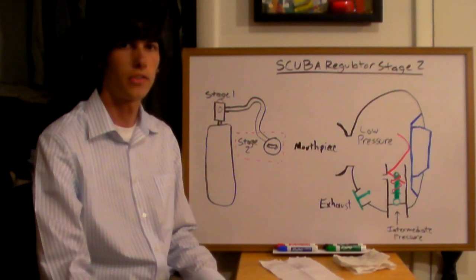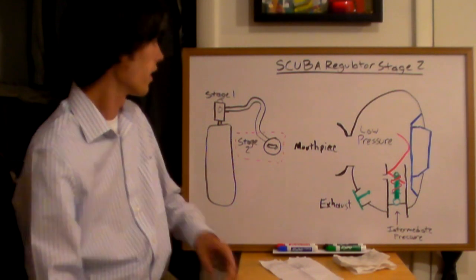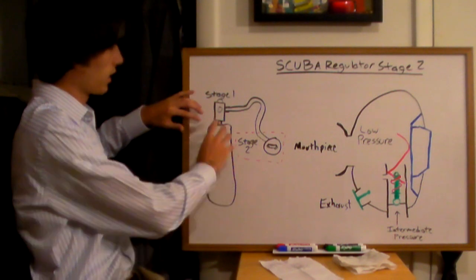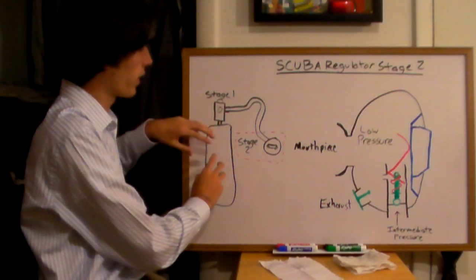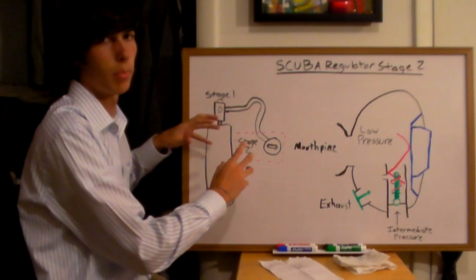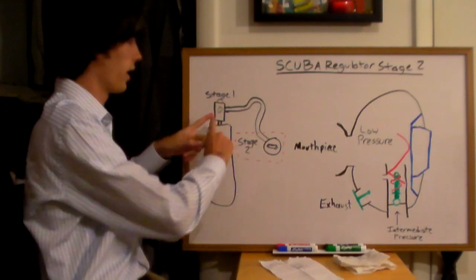In this video I'll explain a stage 2 regulator. Here's your scuba tank and connected to it you've got your stage 1 regulator. This reduces it from a very high pressure to an intermediate pressure, say 150 PSI.